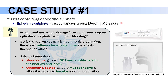Let's take a case study. We can incorporate a variety of active constituents into gels to deliver certain therapeutic effects. One such active constituent is ephedrine sulfate — it's a vasoconstrictor and we can use it to stop nasal bleeding. As a pharmacist and formulator, gels are the best choice as they adhere for a longer time to the nasal mucous membranes and hence enable ephedrine sulfate to exert its vasoconstrictor action on nasal blood vessels.